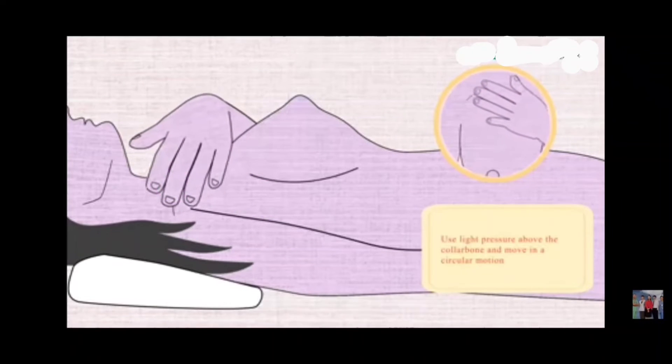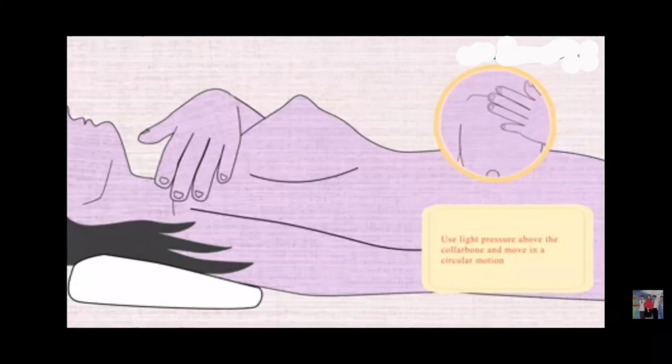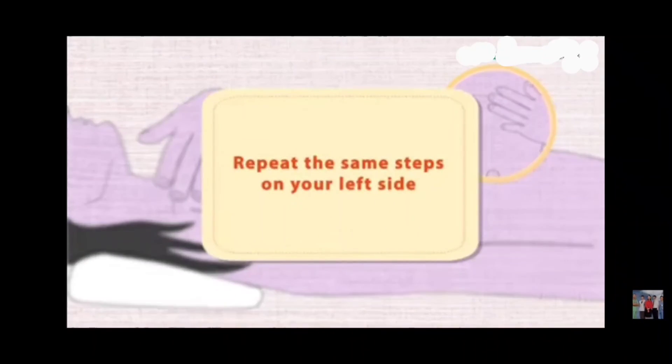To check above the collarbone, use firm pressure and move in a circular motion. Repeat the same steps on the other side.